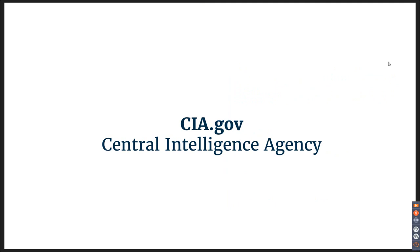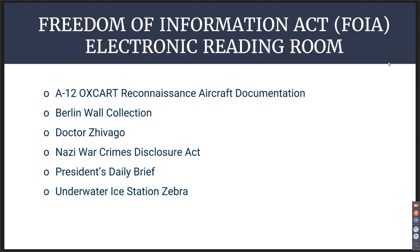The next resource is one geared towards older students: CIA.gov. Our federal documents librarian presented this at What the Tech, and it's a great resource. CIA stands for Central Intelligence Agency. At CIA.gov you can access the Freedom of Information Act electronic reading room, where they offer documents that once were classified and have now been declassified, and you can go in and look at those. Very interesting material — the Nazi War Crimes Disclosure Act, Berlin Wall Collection — great for high school research projects or the budding historian.